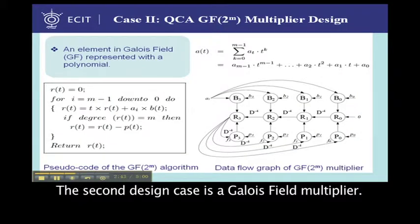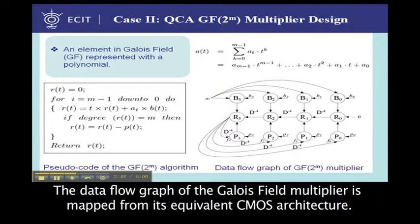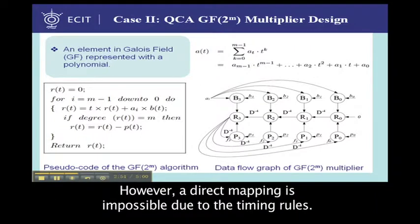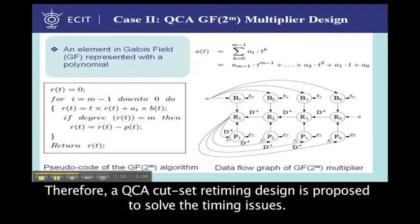The second design case is a Galois field multiplier. The data flow graph of the Galois field multiplier is mapped from its equivalent CMOS architecture. However, a direct mapping is impossible due to the timing rules. Therefore, a QCA systolic array retiming design is proposed to solve the timing issues.